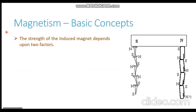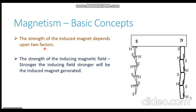Going deeper into induced magnetism, the strength of the induced magnet — how powerful the nail magnet will be — depends upon two factors. Factor one is the strength of the inducing magnetic field: the more powerful the parent bar magnet, the more powerful its magnetic field, and the stronger the induced magnet will become. In other words, stronger the inducing field, stronger will be the induced magnet generated.